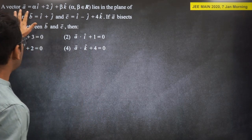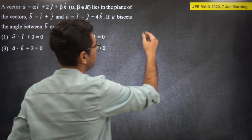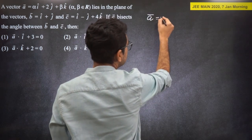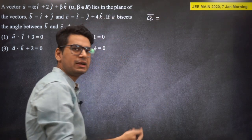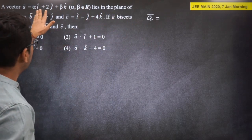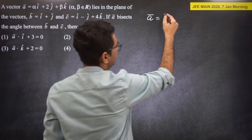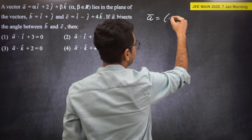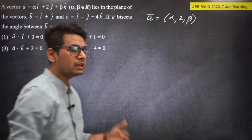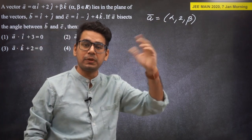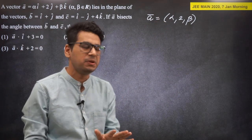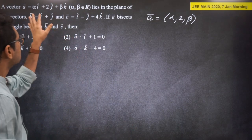It says: vector A with components (alpha, 2, beta) lies in the plane of B and C. One important tip: do not waste a lot of time writing vectors in i-cap, j-cap, k-cap notation. Write them simply in triplet form — it saves time and space in the paper.